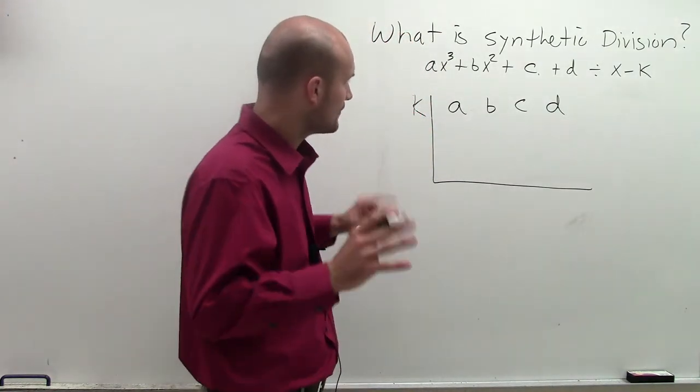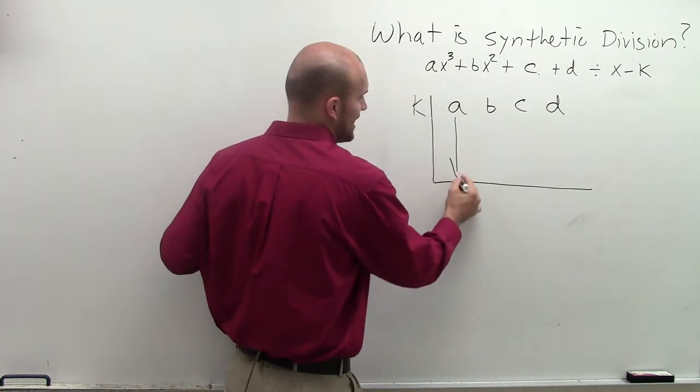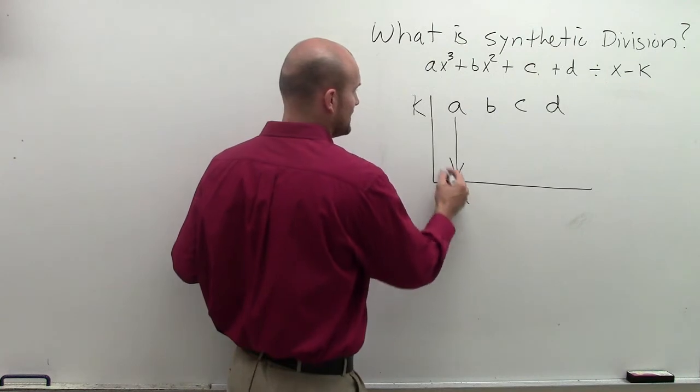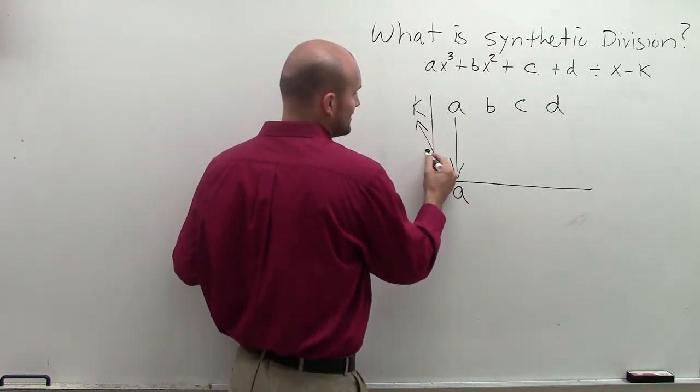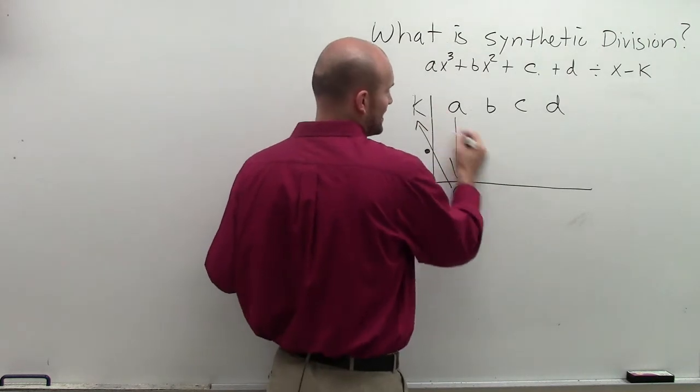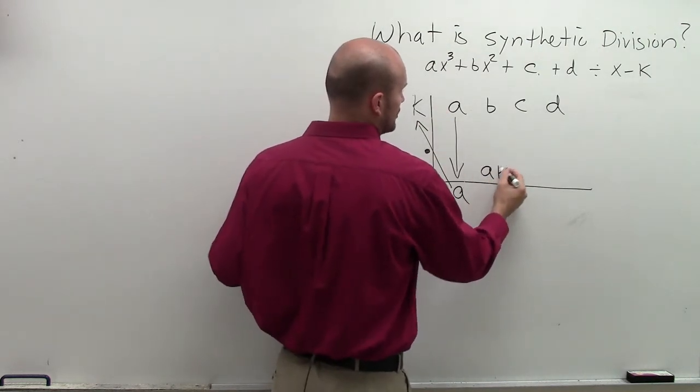Now, first thing you're going to do is you're going to bring your a all the way down and you're going to drop it down. Then what you do is you multiply your a times k. So your a times k, you're going to multiply it, and then that product goes below your b.